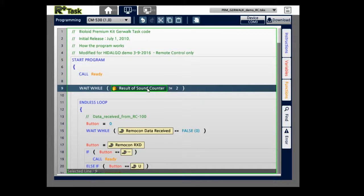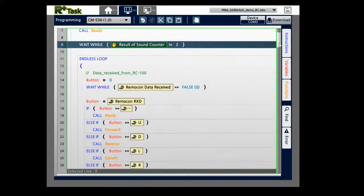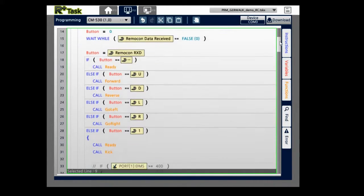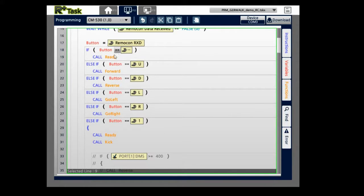What it's going to do then is wait for two claps. When the two claps are recognized, then it's going to start receiving information from the remote controller.